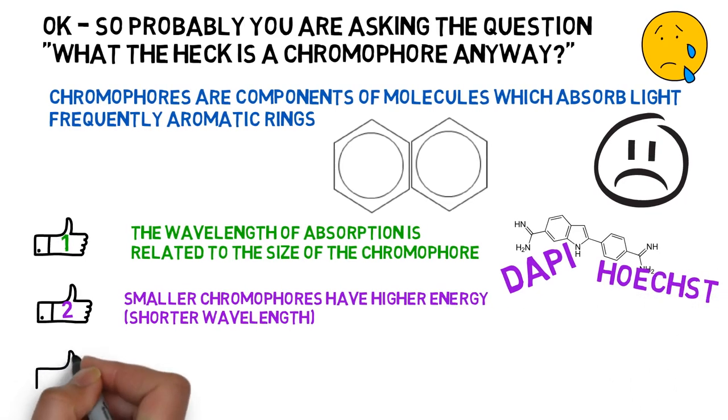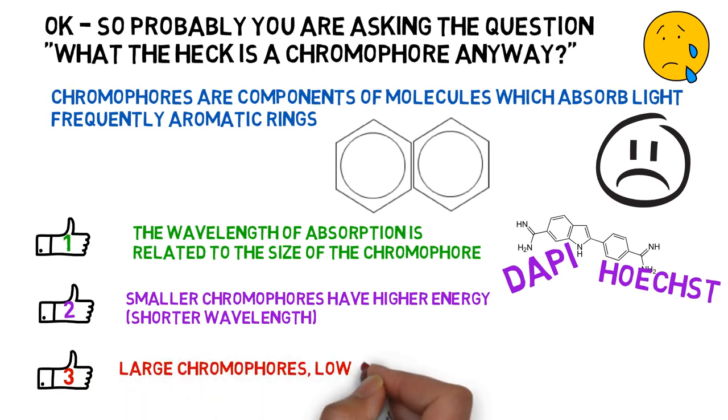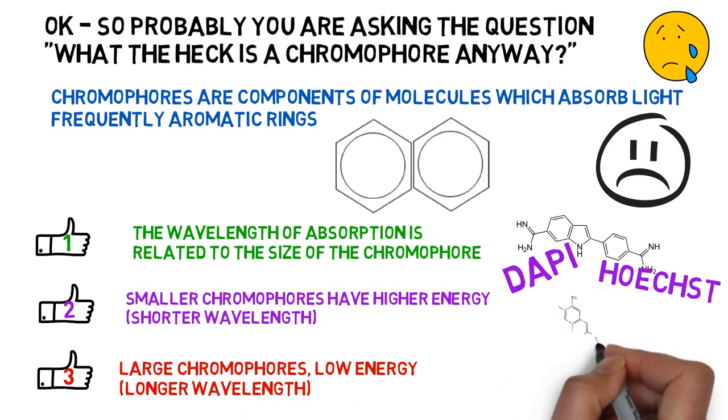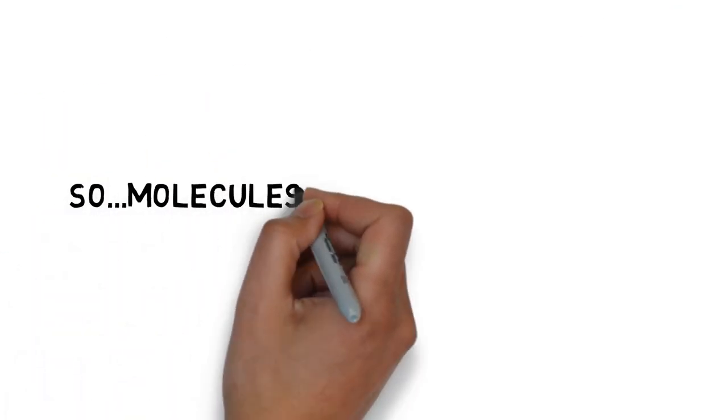And the third rule of thumb, that is that large chromophores have lower energy and thus longer wavelengths. And it would not surprise you to know that these molecules are much larger. An excellent example would be PSY 5.5 or something like APC or allophycocyanin.